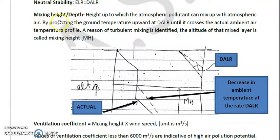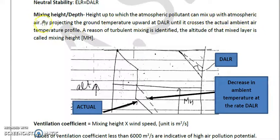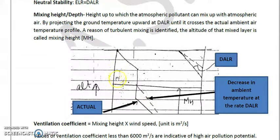These lectures are brought to you by the team of ASS Science Foundation, Delhi. Now we will talk about mixing height, also called mixing depth. It is the height up to which atmospheric pollution can mix with the surrounding atmospheric air. As shown in the diagram, the x-axis shows temperature, the y-axis shows altitude, and mixing height is represented by the symbol MH.